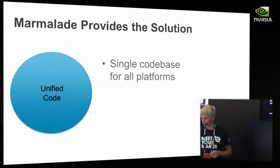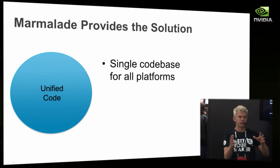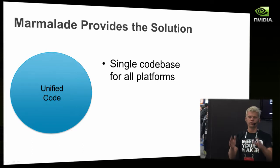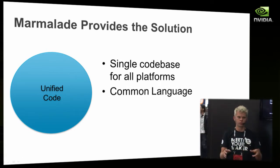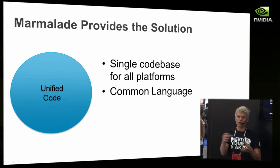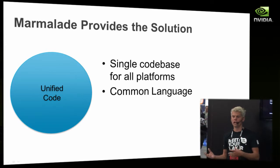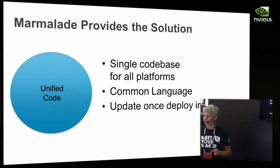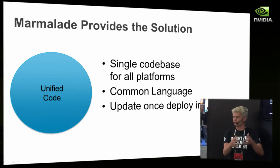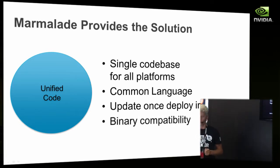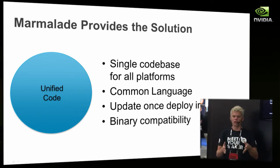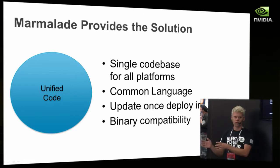With Marmalade, you have a single code base. You don't have an Android build and an iPhone build — just one code base that compiles once, and the same binary runs on all the different platforms. We have a common language for all platforms, which is C and C++, but you can also add Lua, Python, Ruby, or whatever language you want because those runtimes are all written in C++ anyway. When you change your code, you can instantly deploy new builds for all platforms from one tool.